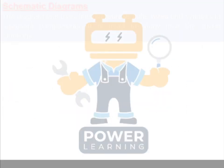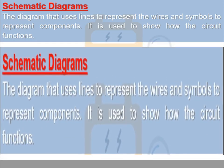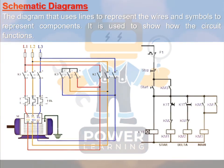Now we move to schematic diagrams. A schematic diagram uses lines to represent wires and symbols to represent components; it shows how the circuit functions in detail. Unlike block diagrams and single line diagrams, schematics show the actual wire-to-wire connections with exact symbols — for example, a star-delta panel wiring diagram. The terms 'wiring diagram' and 'schematic diagram' are often used interchangeably.